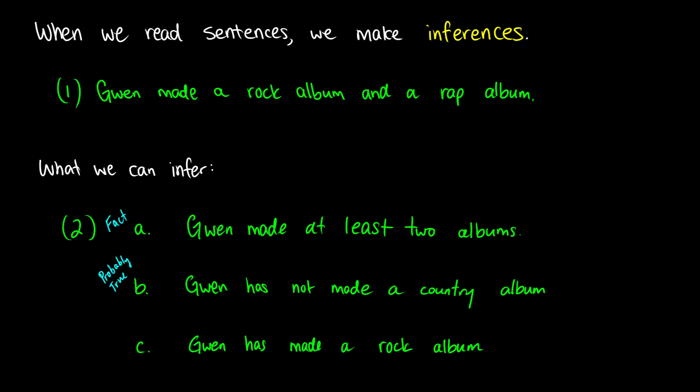That inference is something that's probably true. And with C, if Gwen made a rock album and a rap album, then Gwen has made a rock album — this is also a fact. If she made two albums and we know what those two are, then we can isolate each of those, saying that Gwen has made each of those albums independently. So these are called inferences, and there's a different type between A and C, and then B.